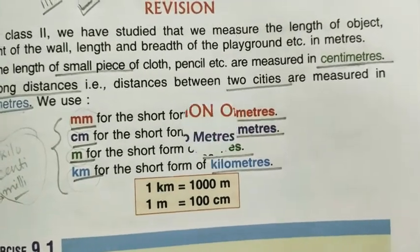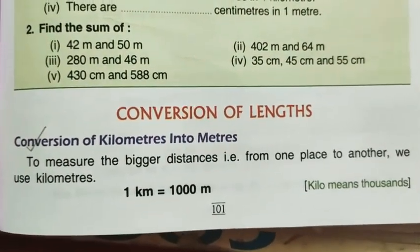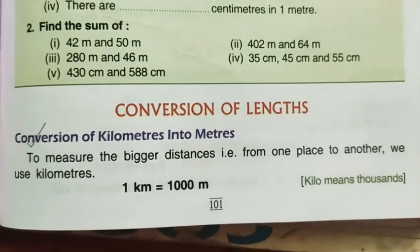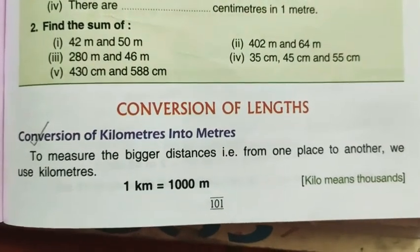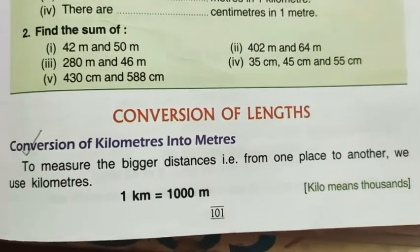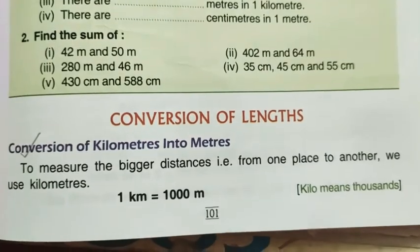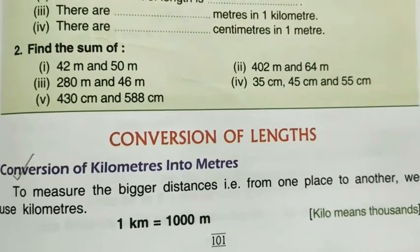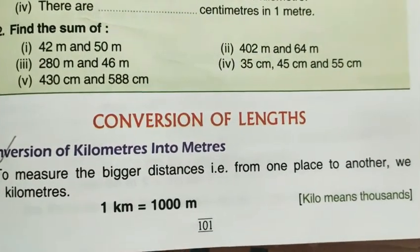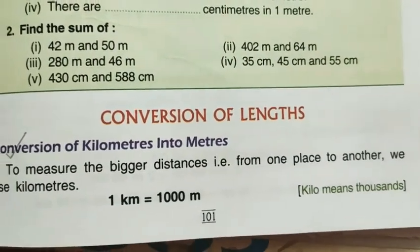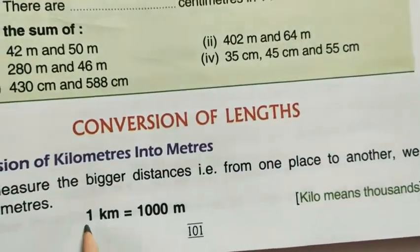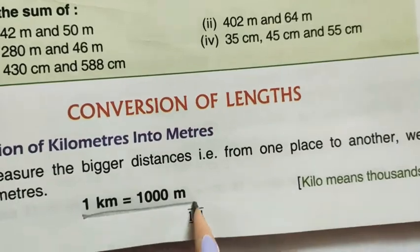In this chapter we will see how we can measure the length of different objects using different units. Now let's concentrate on conversion of lengths. First we will learn about the conversion of kilometers into meters. For measuring any bigger distance we use kilometer — the distance from one place to another, distance between two cities, the length of a road. Basically, kilometer is a bigger unit than meter, and one kilometer is equal to one thousand meters.